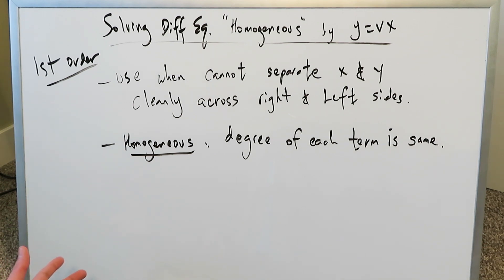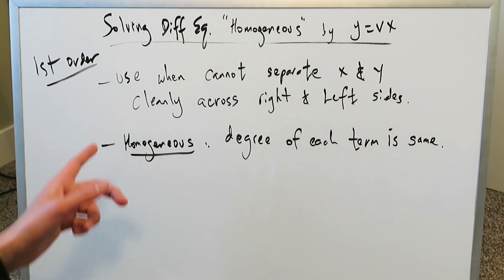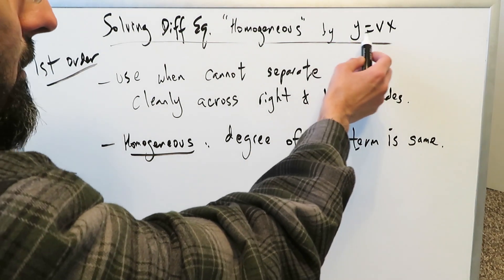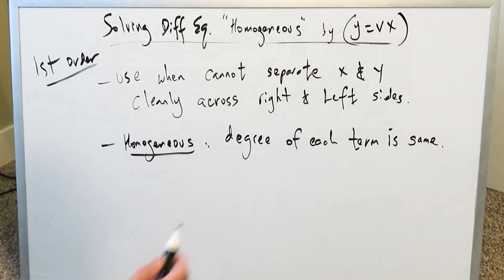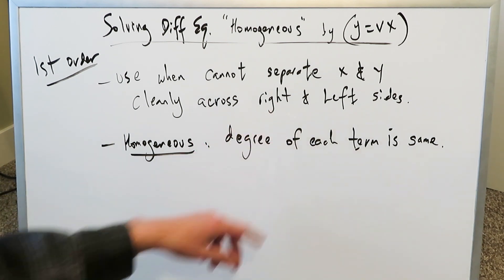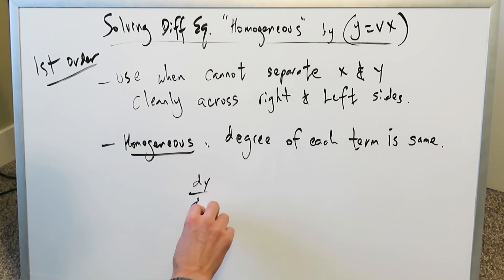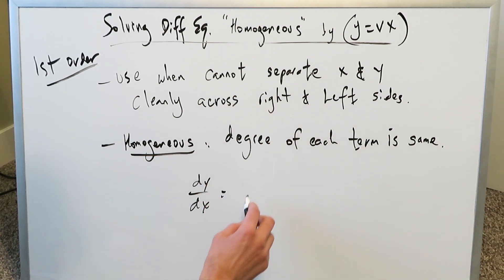If you have a differential equation, you're solving it to determine what function or expression was it for which that differential equation is true. We're looking at homogeneous differential equations and we're going to utilize the specific method of solving by the y equals vx method. Consider this quick example — we're not going to solve it out, but this is just to prove a point.